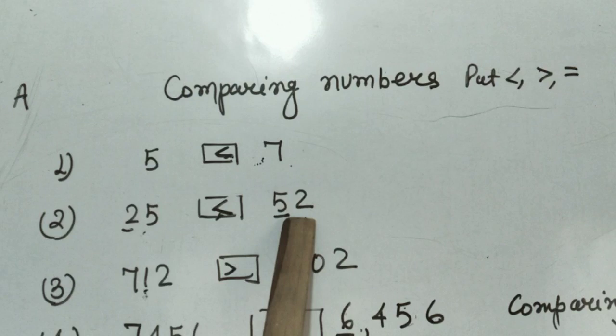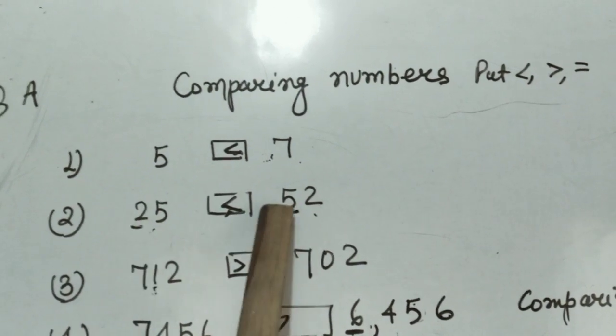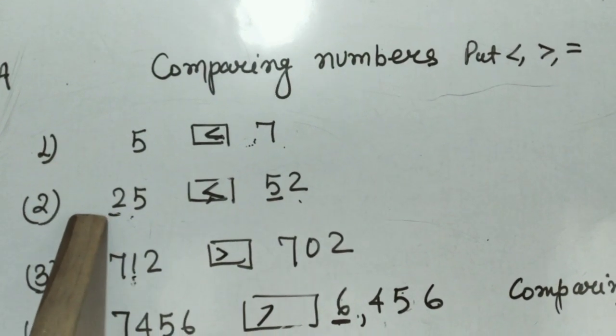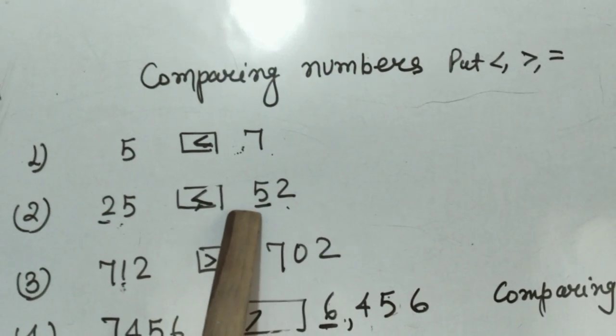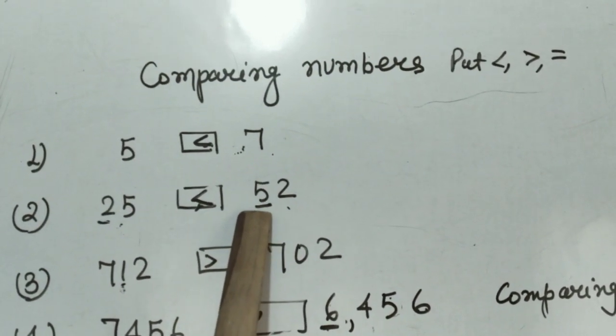25 and 52. We know it is a 2-digit number. Let us compare at the 10th place. Here it is 2, here it is 5. 5 is greater than 2, so 52 is bigger than 25.